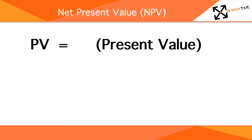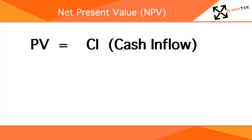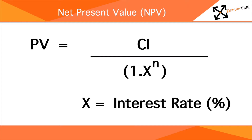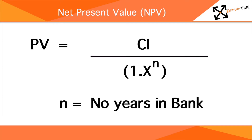PV refers to present value. CI is the cash inflow you expect to make from the new product. X is the discount rate or interest rate that you would expect to receive by simply depositing the money in a bank or investment scheme as a less risky alternative to launching a new product. N is the number of years after which the investment is made that you will receive the cash inflow.